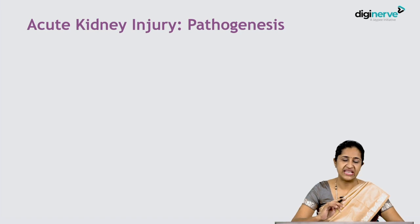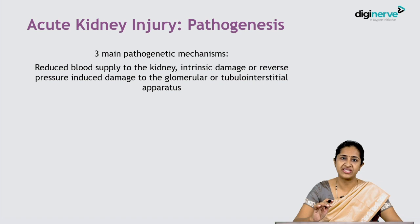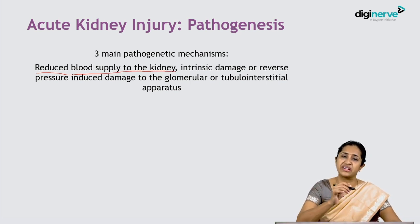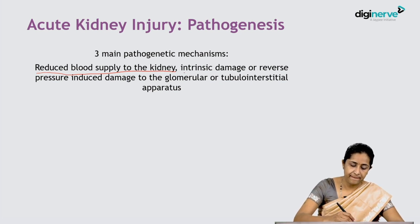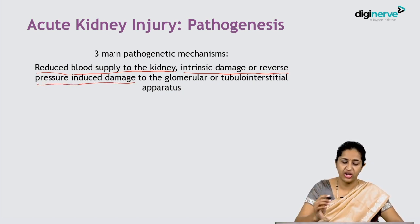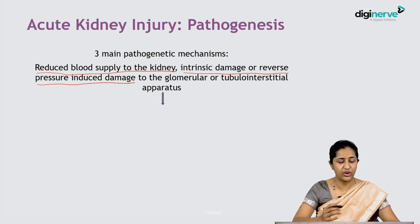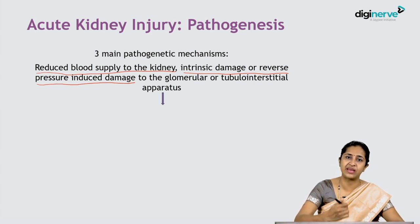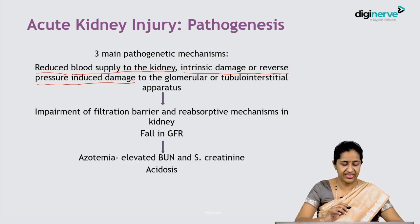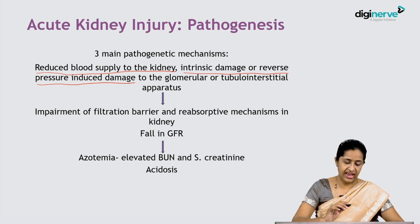Coming to the pathogenesis, based upon the etiologies, there are three main pathogenetic mechanisms: first, reduced blood supply to the kidney in pre-renal causes; second, intrinsic damage to the kidney; and third, reverse back pressure changes causing damage to the glomerular or tubulo-interstitial apparatus. In all three scenarios, there is impairment of the filtration barrier and resorptive mechanisms, causing a fall in glomerular filtration rate and clinically evident azotemia — elevated blood urea nitrogen, serum creatinine, and eventually acidosis.